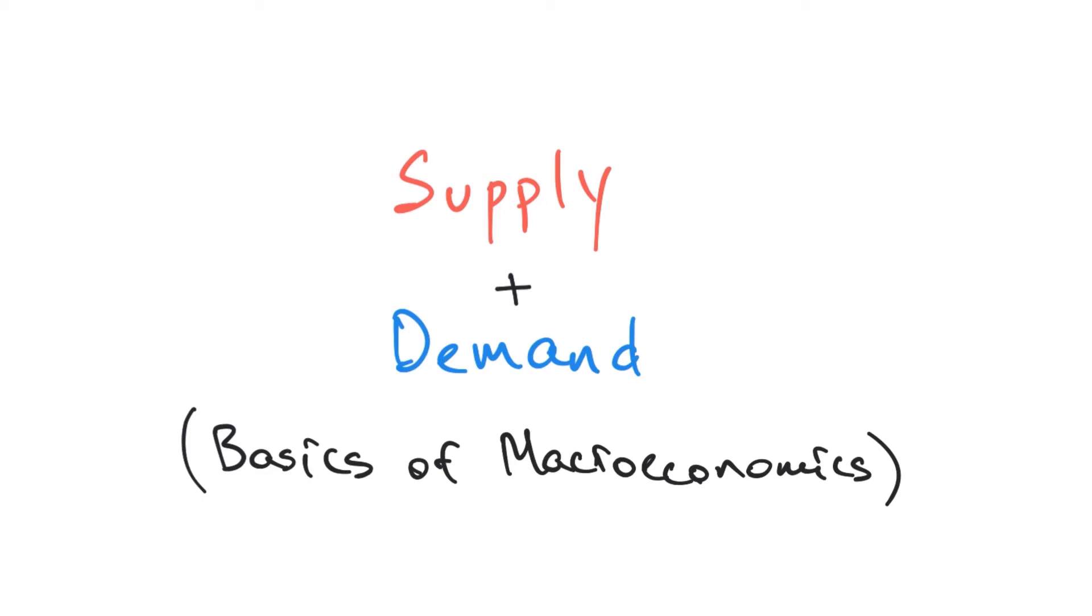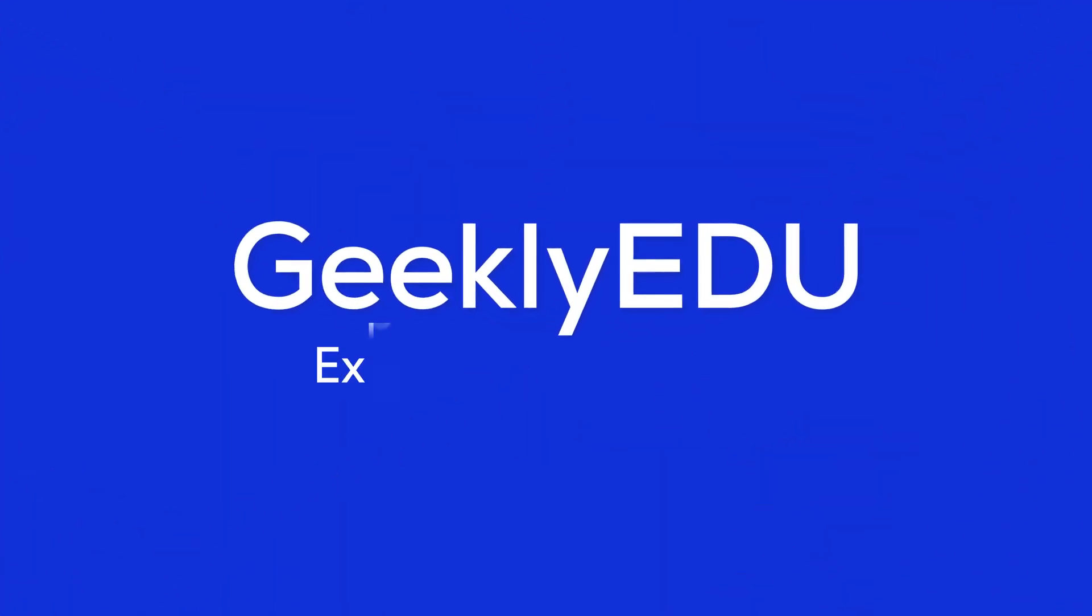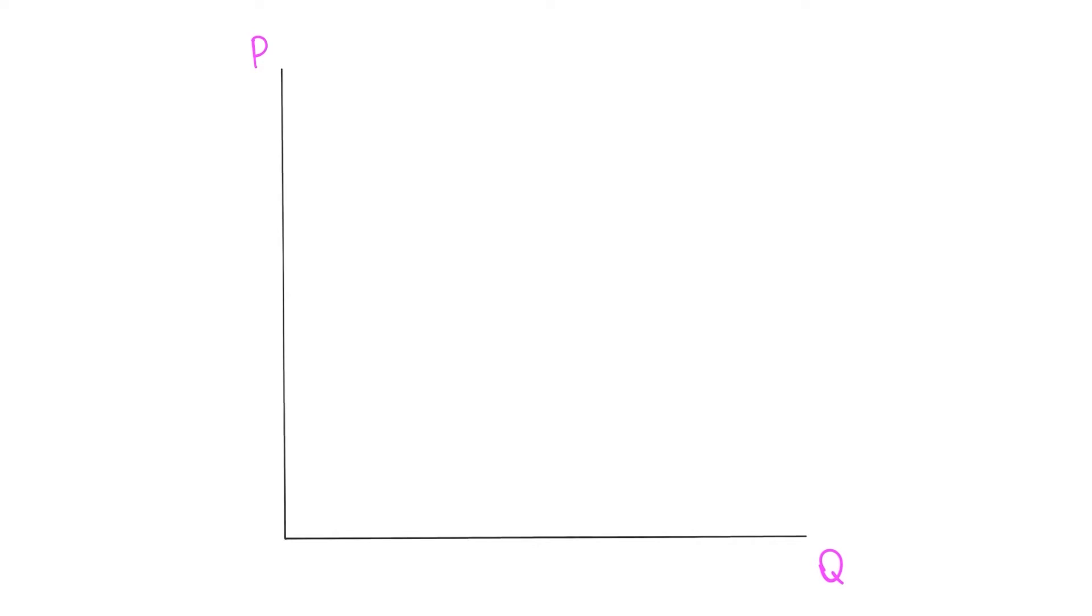Hey guys, so today we'll talk about supply and demand, the most basic building blocks of macroeconomics. And we'll also solve some practice problems to help you understand what it's all about. Let's start by setting up a graph. We have P or price on the vertical axis and Q or quantity on the horizontal axis.